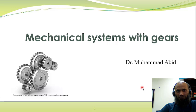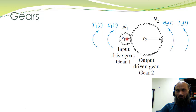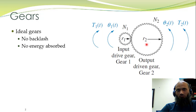Here the figure shows a gear with the input gear of radius r1 and there are N1 number of teeth on this gear. The output gear has radius r2 and there are N2 teeth on this gear. If we apply a torque T1 in the clockwise direction on the input gear, there will be an angular displacement of theta1 in this input gear, which will result in rotation of the output gear in the counterclockwise direction.